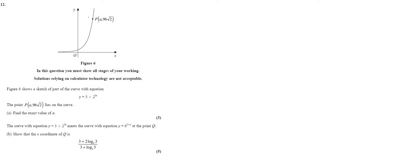I've been asked to clarify this question again — it's on our favourite subject, logs. We've got a curve and we're given the equation y equals three times two to the power of two x. We're going to find the exact value of a. We know that y is 96 times the square root of two, so that is equal to three times two to the power of two x.